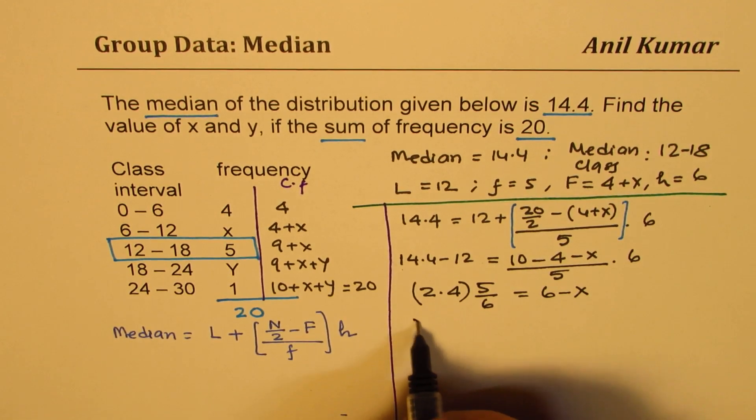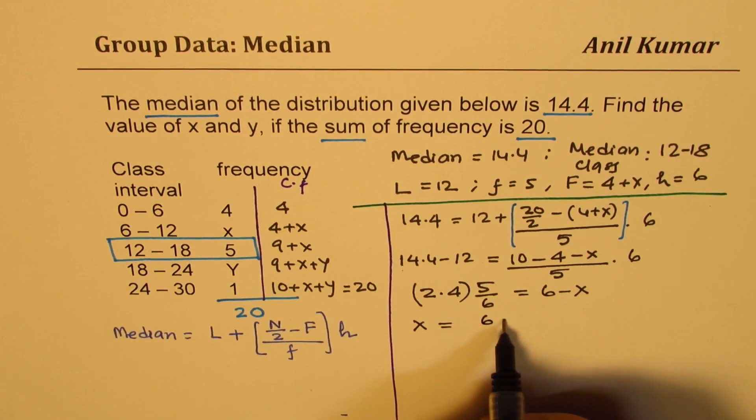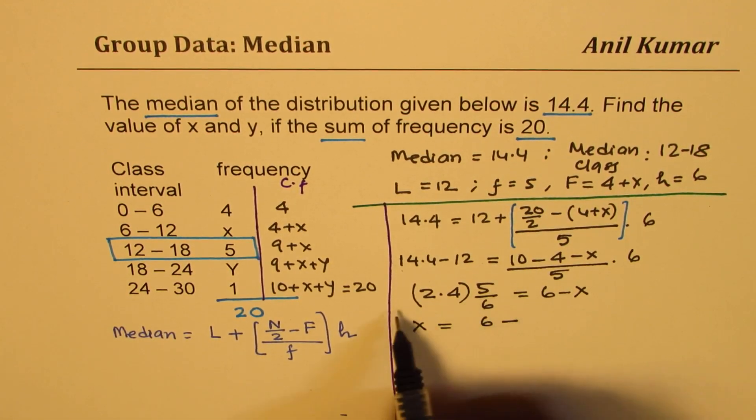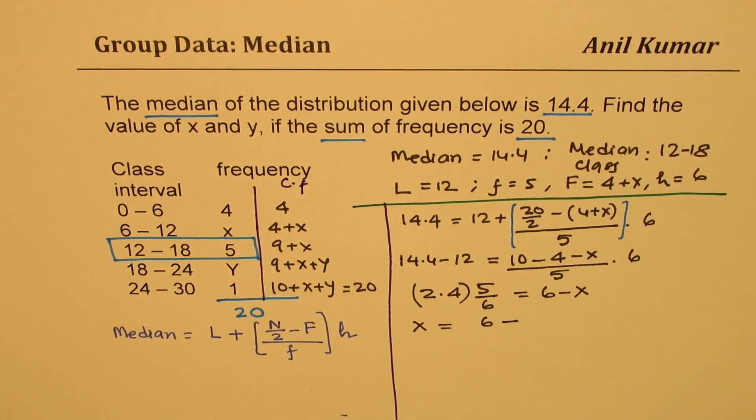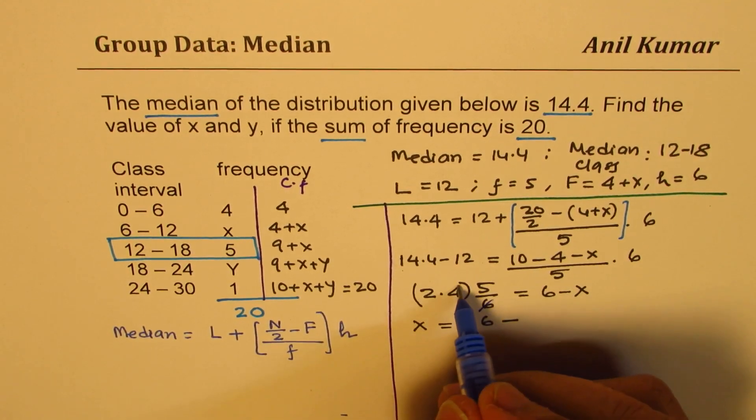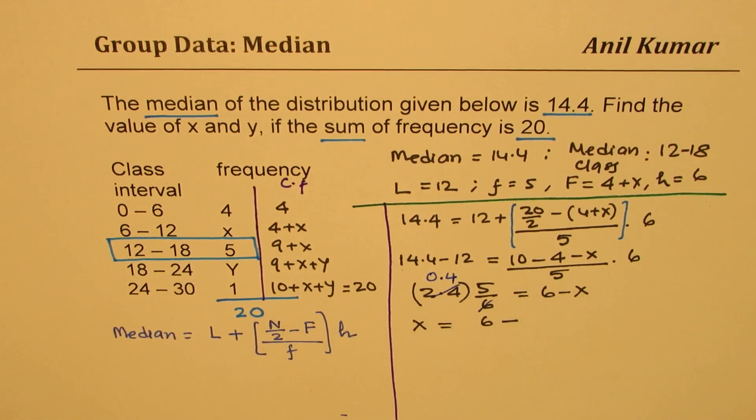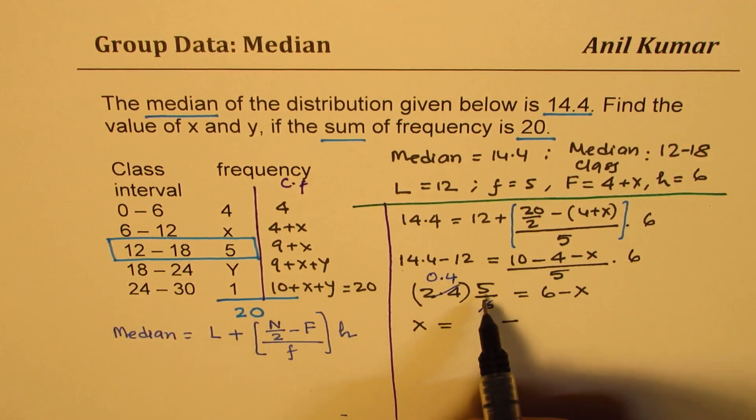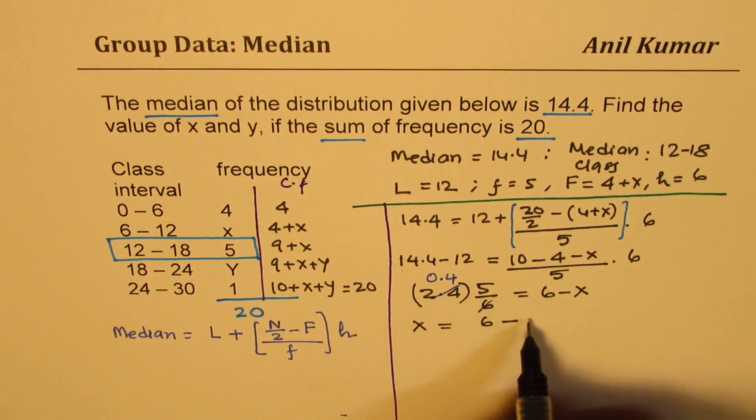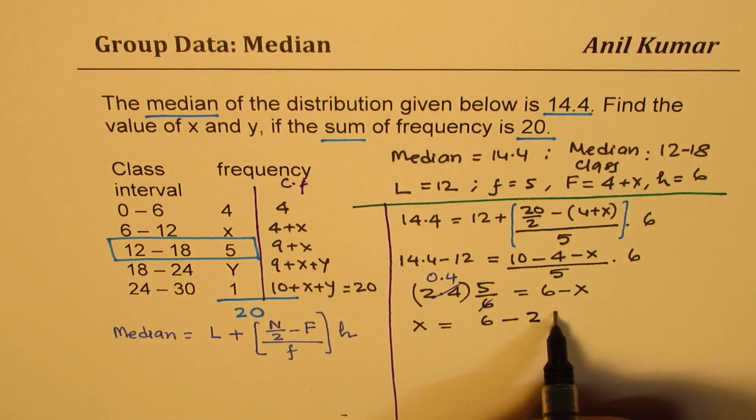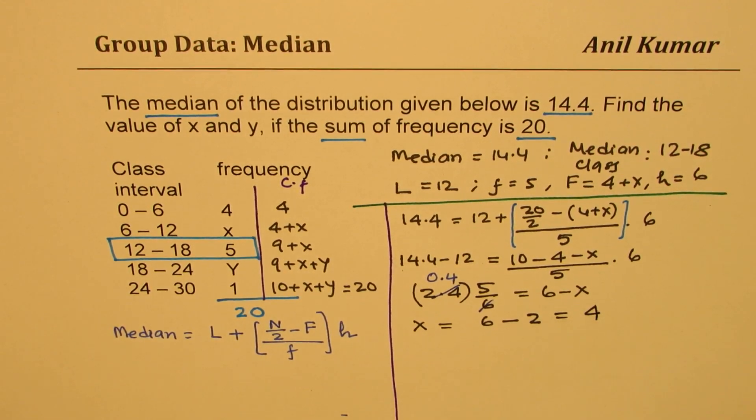Now x is equal to 6 minus, we can multiply this, 6 times 4. So 5 times 4 is 20, so 6 minus 2 which is 4. So we get the value of x as equal to 4.